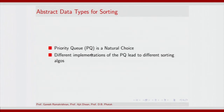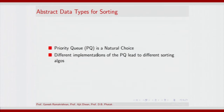A priority queue is a very natural choice of an abstract data type. The priority queue lets you specify the highest priority element, and both insertion and selection from the abstract data type could be based on priority. Different implementations of the priority queue lead to different sorting algorithms.